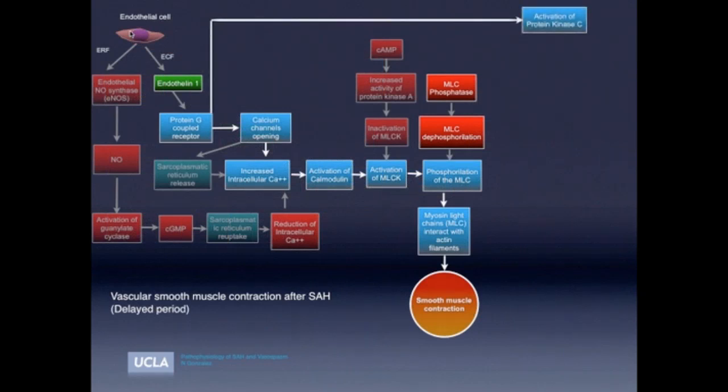The protein G-coupled receptors get to be activated by the endothelin-1, which is produced in excess in patients with subarachnoid hemorrhage, as has been demonstrated in multiple studies, both in CSF and in serum of individuals with subarachnoid hemorrhage. And the protein G-coupled receptors are not going to only open the calcium channels, but are also going to activate the protein kinase C.